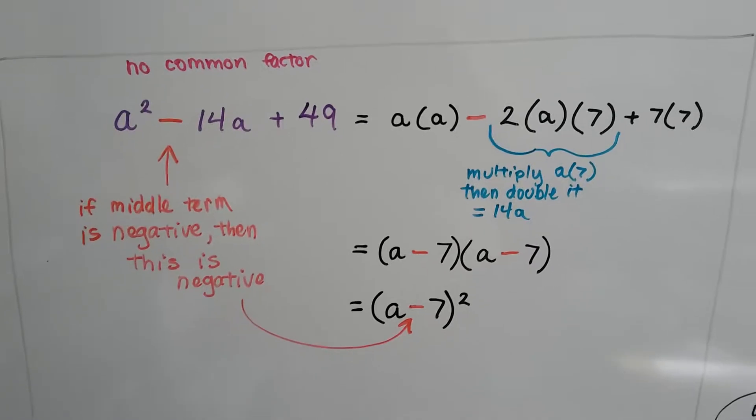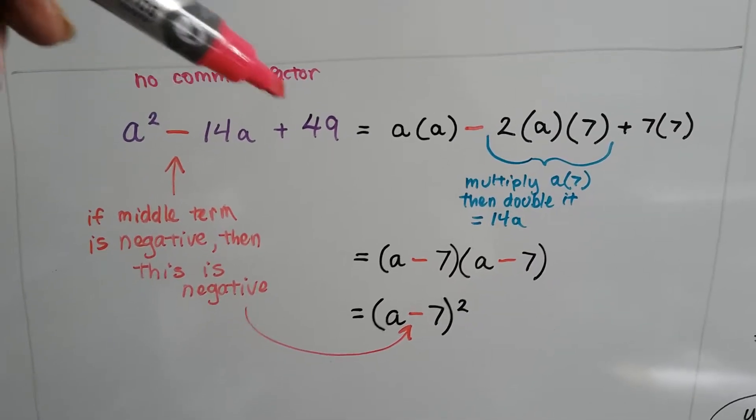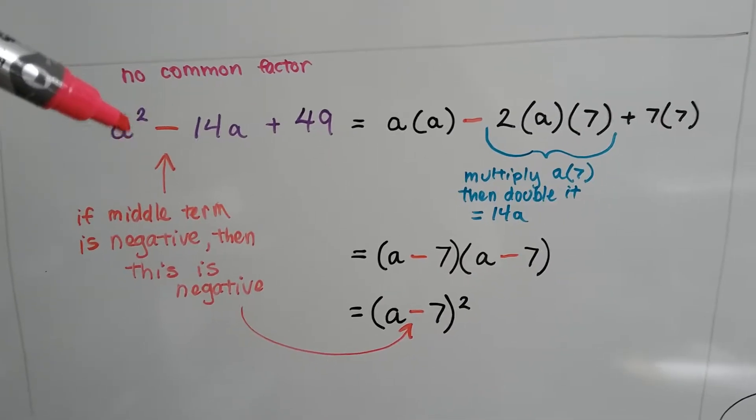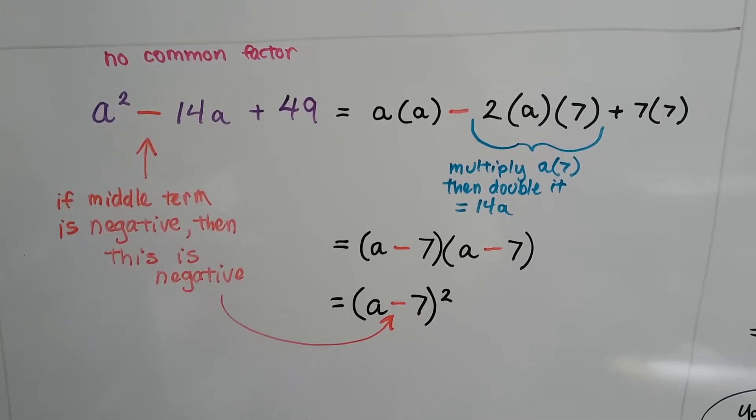All right? So is there a common factor? Well, that's a 2 and a 7. That's a 7 and a 7. But there's no 7 in here. So there's no common factor.